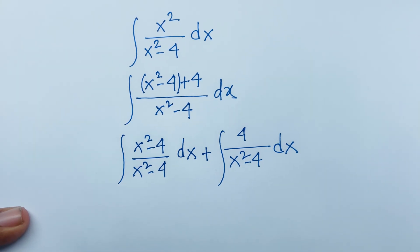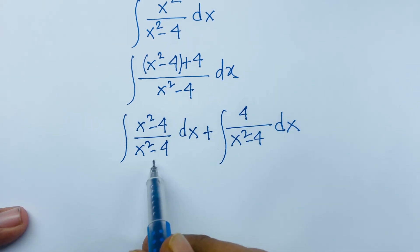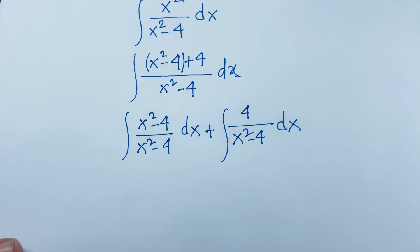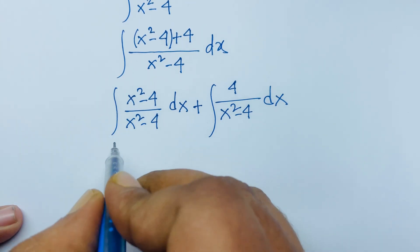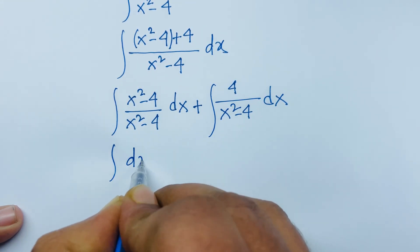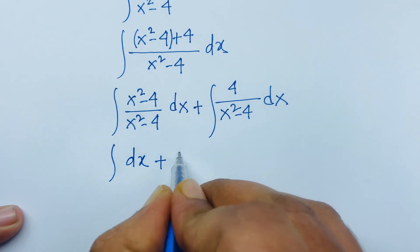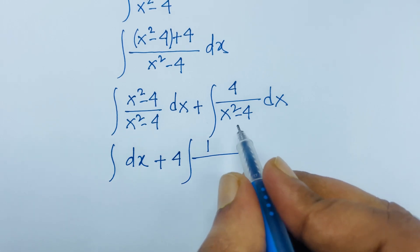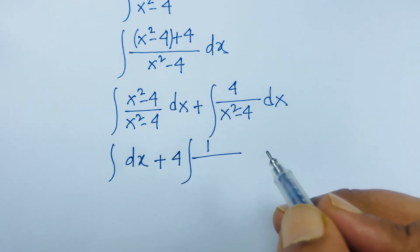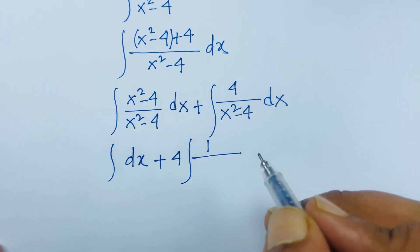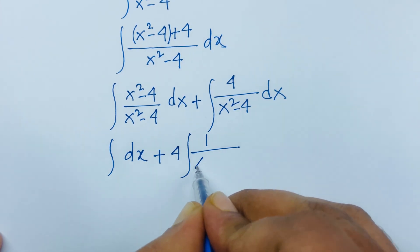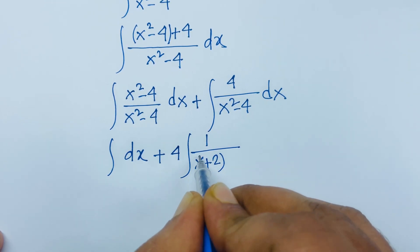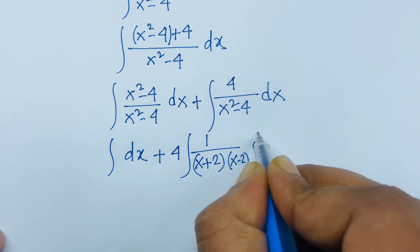The (x squared minus 4) terms cancel in the first integral, giving us the integral of dx plus 4 times the integral of 1/(x squared minus 4) dx. Now we factor the denominator: x squared minus 4 is a difference of squares, equal to (x plus 2)(x minus 2).